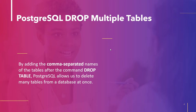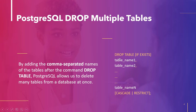The next topic is PostgreSQL Drop Multiple Tables. We can remove multiple tables from a database in one statement in PostgreSQL by specifying the comma-separated names of the tables after the statement Drop Table. The syntax is: DROP TABLE table_name1, table_name2 — specifying the names of tables to be removed from the database.